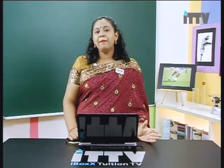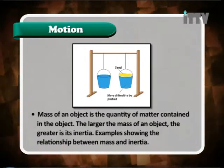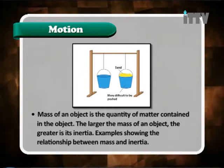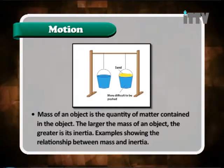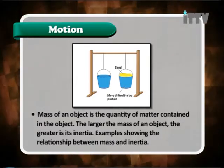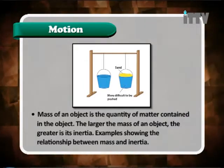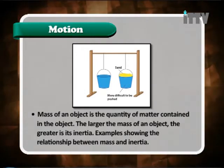The concept involved here is inertia, whereby matter resists changes that occur. Now let's look at how inertia is related to mass. Mass of an object is the quantity of matter contained in the object. The larger the mass of an object, the greater is its inertia. Here in this illustration, we can see two different types of containers — one is an empty container and one contains sand — to illustrate how mass plays an important role in the concept of inertia.